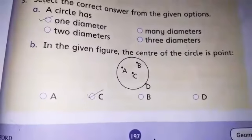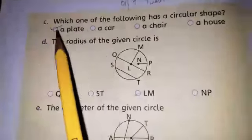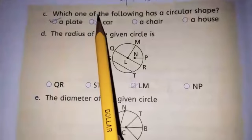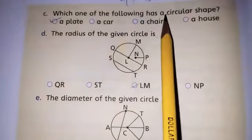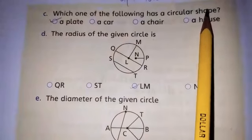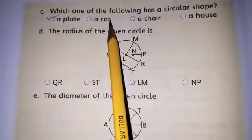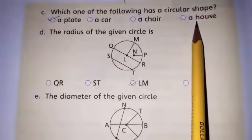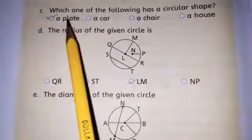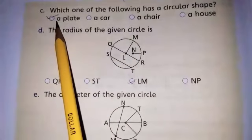Now, open page number 198. See which one of the following has a circular shape? A plate, a car, a chair, a house. Excellent. In circle shape, there is a plate.